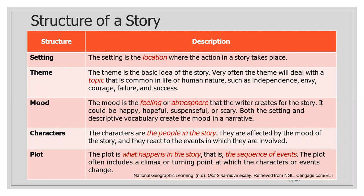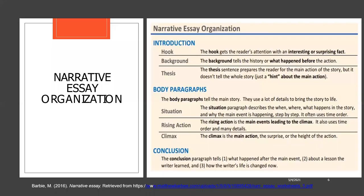The next structure is characters. The characters are the people in the story. They are affected by the mood of the story and they react to the events in which they are involved. And the last is plot. The plot is what happens in the story — that is the sequence of events. The plot often includes a climax or turning point at which the characters or events change.